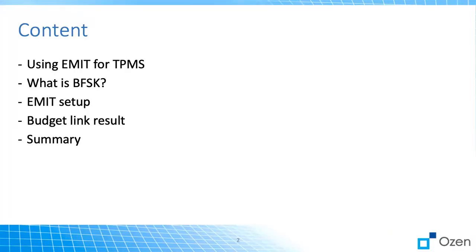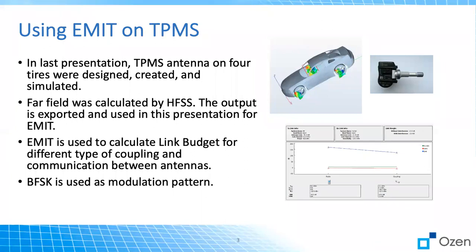So we'll talk about what is BFSK, what is the setup in EMIT, and what are the results. EMIT is a very useful tool that we can calculate the link budget and some other post-process information for our report. You can use HFSS output or other software output and put the antenna result like S-parameters or far field pattern in as an input, or you can also create them yourself inside the software and then study the link budget and other output.